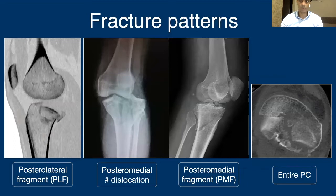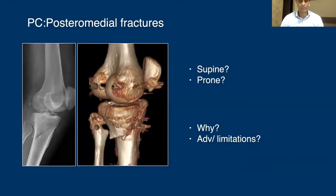Looking at the fracture patterns that can occur on the posterior column, you can have isolated posterolateral fragments, posteromedial fragments with or without dislocation patterns, and sometimes you can have the entire posterior column fracture.